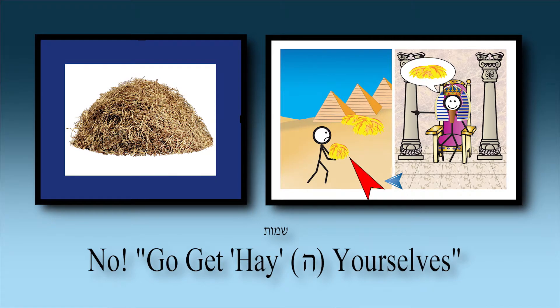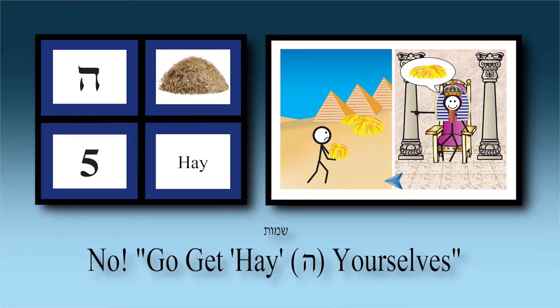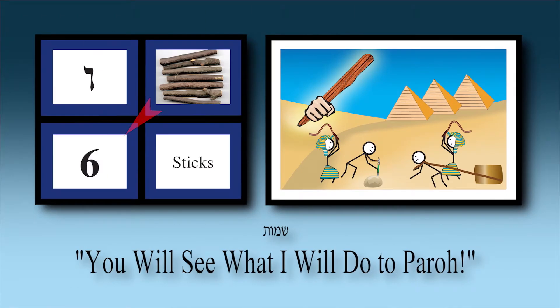The second part of the picture shows the Jews now having to search for the straw themselves, which is far more laborious than before when it was provided. The slavery actually got worse. All of this is in chapter Hey — chapter five.